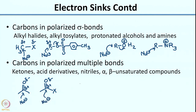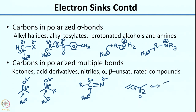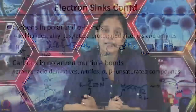Other electron sinks include nitriles, where again you can imagine a nucleophile attacking the carbon because of the δ+ and δ−. Another example is alpha-beta unsaturated compounds — drawing a resonance structure shows a δ+ and δ− at the beta carbon, making it a good sink where a nucleophile can add in. You will have seen this in the Michael addition reaction. These are all examples of electron sources and electron sinks.